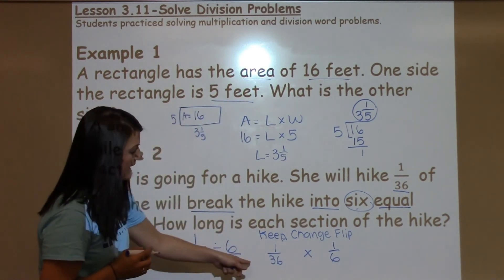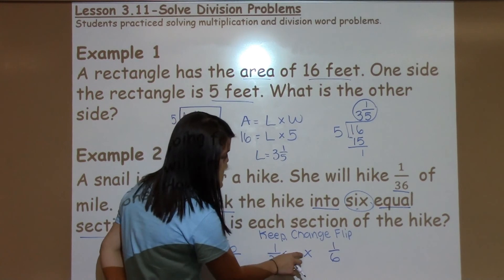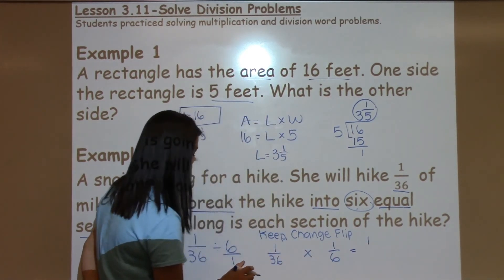So now that I have my keep, change, flip lined up, I just do top times top. 1 times 1 equals 1, and now I'll do 36 times 6.